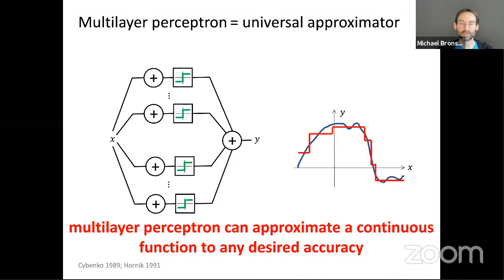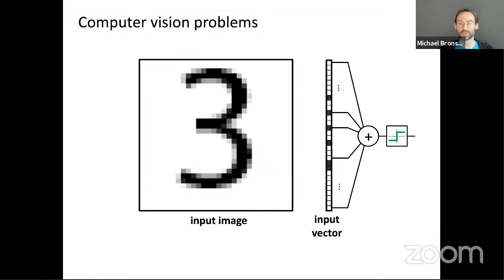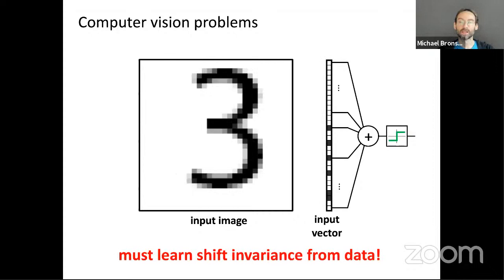Where this matters is when you consider real-world high-dimensional data, such as digit classification in computer vision. If you approach this with a simple perceptron, you stack your image as a vector and feed it into the network. The problem is that if I shift the image by just one pixel, the input will be very different even though it's still the same digit. As a result, I need a lot of data to teach the network that these are the same digit, and learning this invariance to shifts from data appears to be impossible due to the curse of dimensionality — the number of examples required would exceed the number of atoms in the universe. This is why neural networks simply never worked for even simple image classification in the 1960s and 70s.